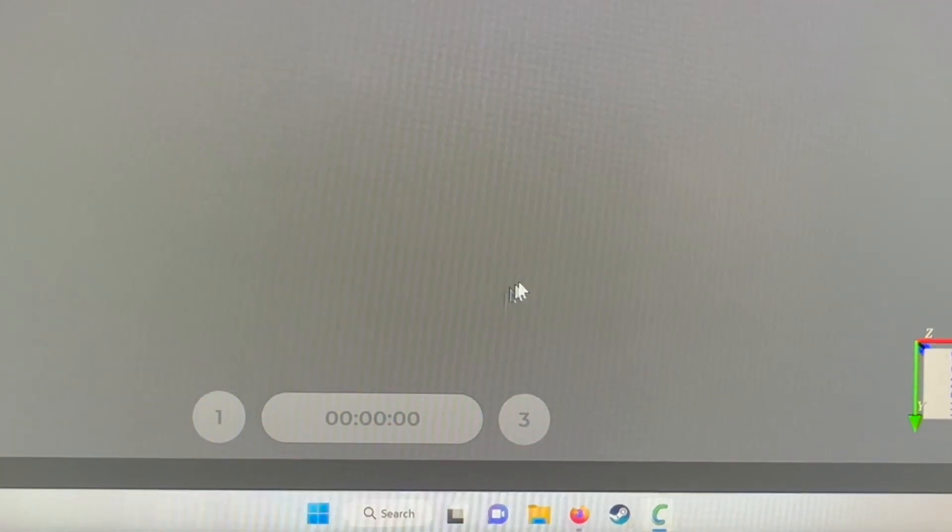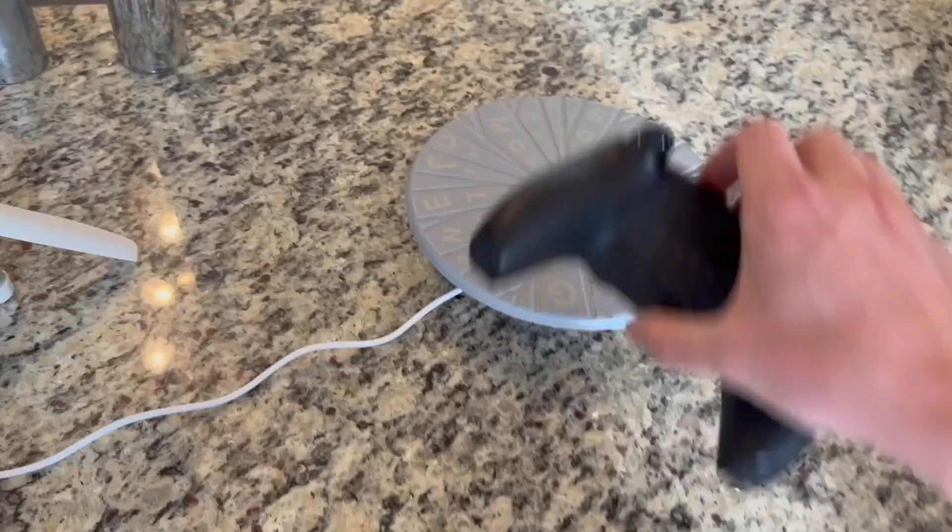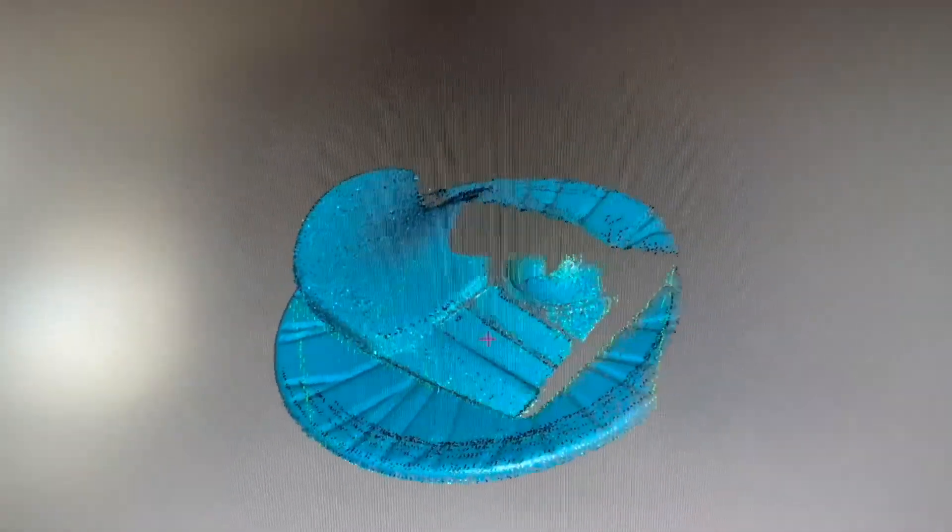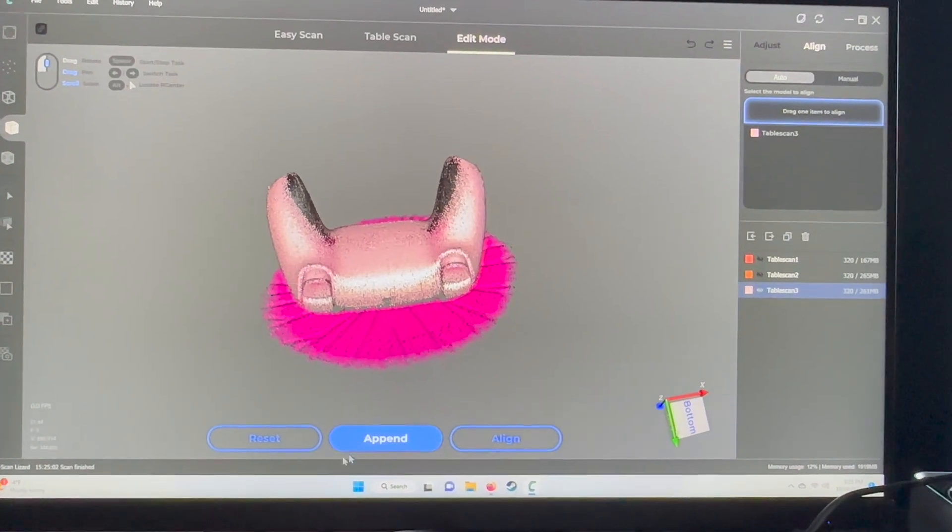Stop the preview, hit initialize, wait till the plate turns red, hit stop, throw your object back on the plate, hit scan, it takes about 20 seconds, and then you can append other scans in other orientations.